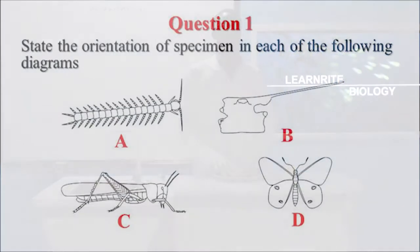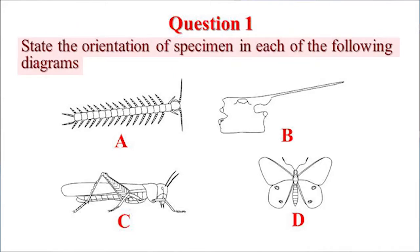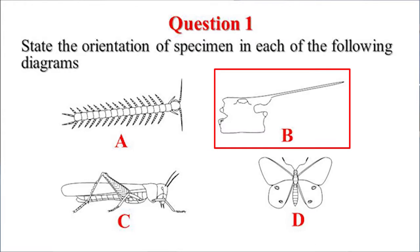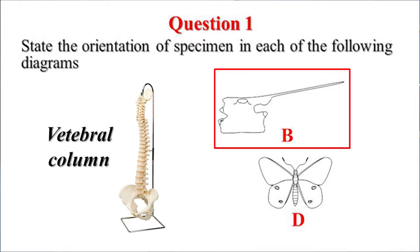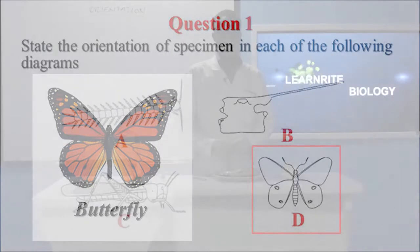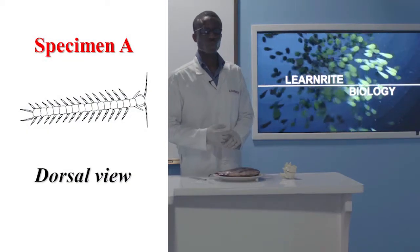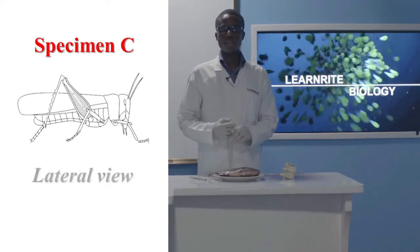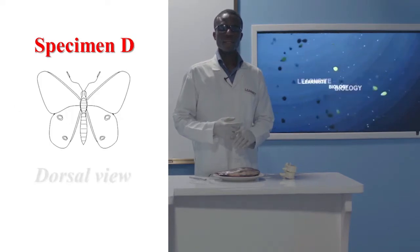Let's look at some questions. Question one: state the orientation of the specimen in each of the following diagrams. On your screen we have specimens A, B, C, and D. Specimen A is a diagram of a centipede. Specimen B is a diagram of a vertebra — a bone in the vertebral column of a mammal. Specimen C is a grasshopper, and D is a butterfly. Specimen A is the dorsal view. Specimen B is the lateral view because you are looking at the bone from the side. Specimen C is also the lateral view of grasshopper. And D is a dorsal view.